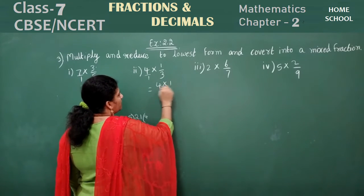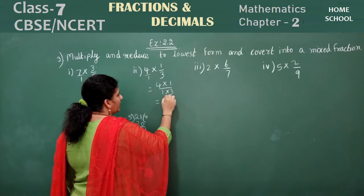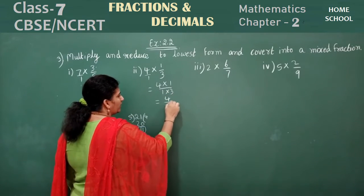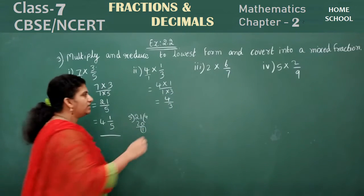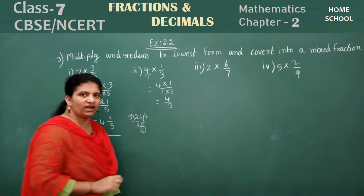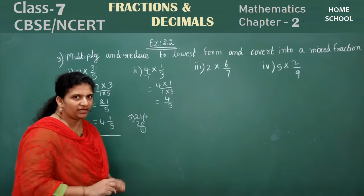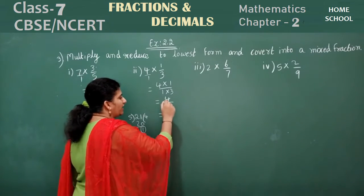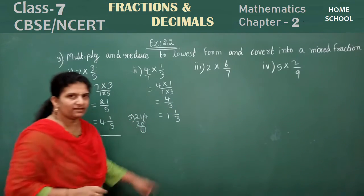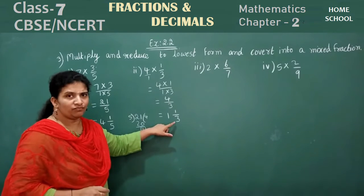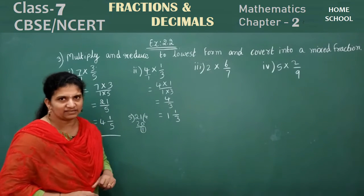Next problem: 4 into 1 by 3. Write it as 4 into 1 by 1 into 3, which gives 4 by 3. Can you cancel? No. Divide: 3 ones are 3, remainder 1. So the answer is 1 and 1 by 3. To verify: 3 into 1 is 3, plus 1 is 4, giving 4 by 3. Correct.